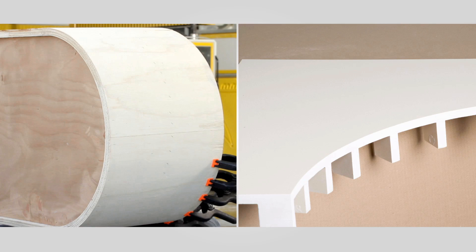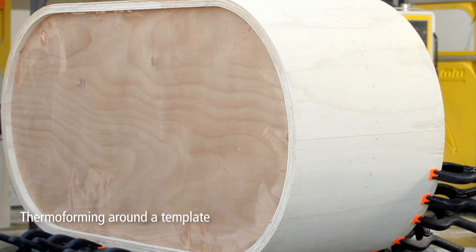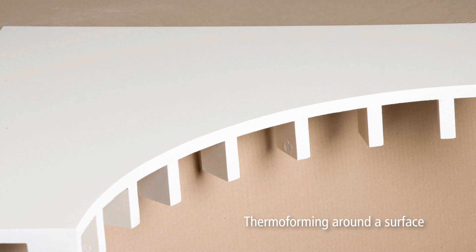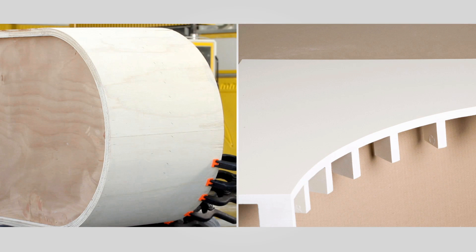One method is thermoforming around a template for which you will need to prepare a template in advance out of wood or another suitable material. The second method is thermoforming around a surface. For both methods, the preparations are the same.